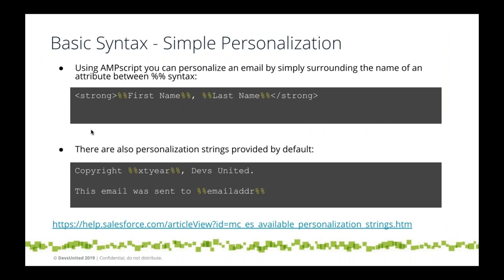You can use AMPscript to print the first name simply with percent-percent and the column name. There is also a function called AttributeValue which is better practice when you don't know if a column will exist in your data extension — that's a bit more advanced and we won't get into it this session. Personalization strings are another useful way to print default values that Marketing Cloud provides.